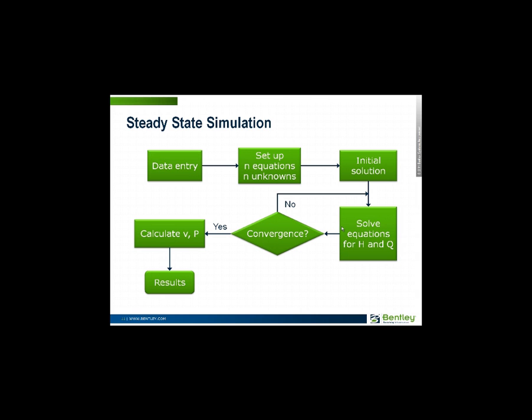And then from knowing the head at junction nodes and the flow in these pipes, we can calculate secondary results such as the velocity in the pipes, the pressure at junctions, and make these results available to the user. So that's the most fundamental kind of solution you could have in a hydraulic network.